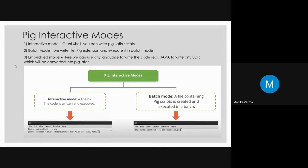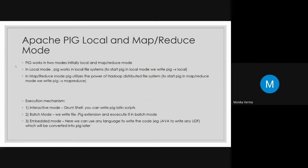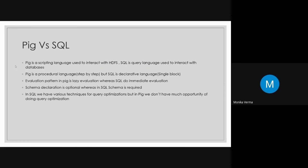So there are three execution mechanisms in Pig: interactive, batch, and embedded mode. Now let's look at the difference between Pig and SQL. Pig is a scripting language used to interact with HDFS, while SQL is a query language used to interact with databases. Pig is a procedural language with a step-by-step data flow, whereas SQL is a declarative language where you declare everything in a single block and run the query.